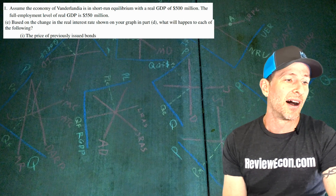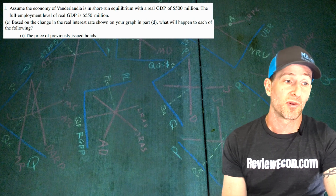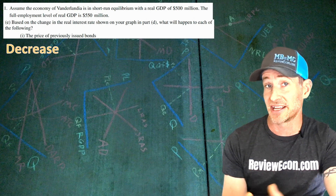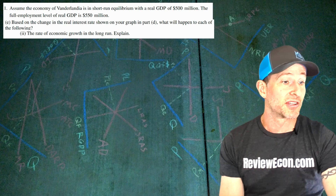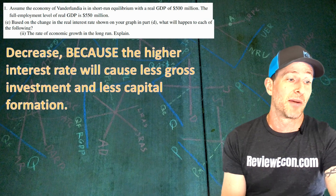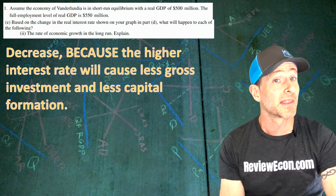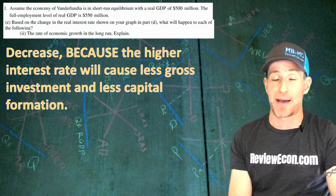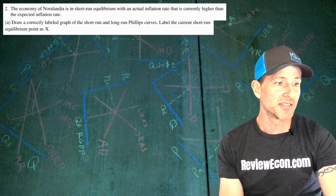Based on the interest rate change — remember, the interest rate went up — what happens to the price of previously issued bonds? That is going to be a decrease, because there is an inverse relationship between interest rates and the prices of previously issued bonds. What's going to happen to the rate of economic growth in the long run? Economic growth will decrease because the higher interest rate will cause less gross investment and therefore less capital formation. You'll definitely need to mention the word capital.